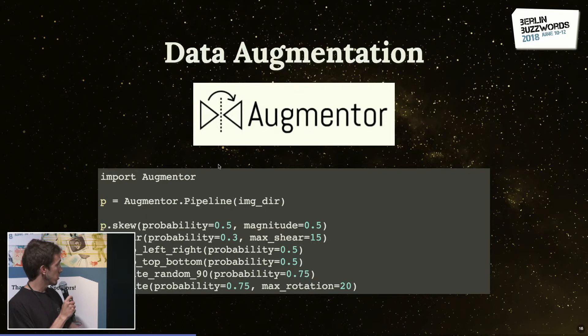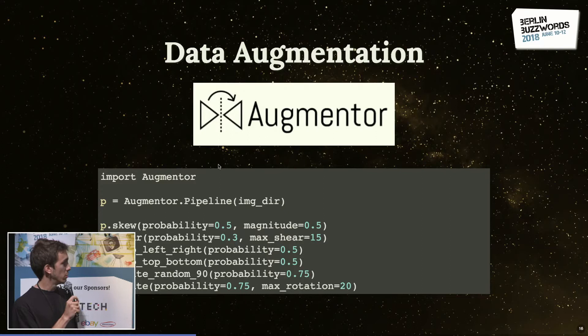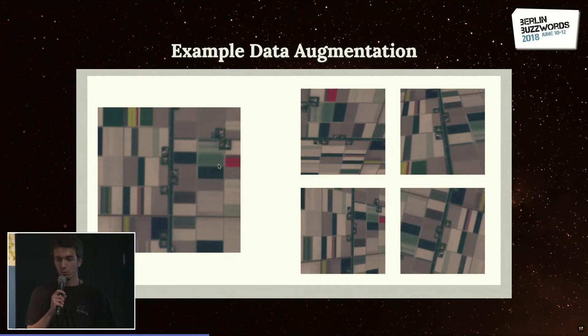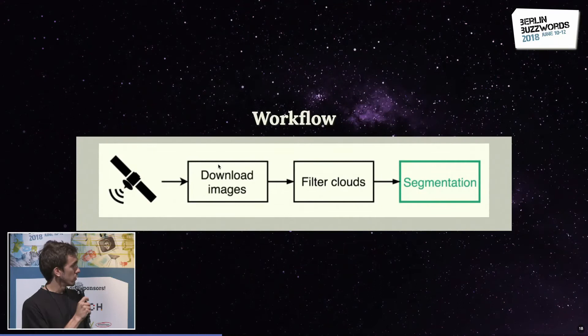For data augmentation, we use Augmentor, a Python library I highly recommend. It's super easy: you define a pipeline, define a couple of operations, and get your augmented images. The transformations we chose are skews, flips, and rotations. You can see the original image and the result of applying random transformations — some changes in perspective and rotations — but we can still identify the tulip fields from it.